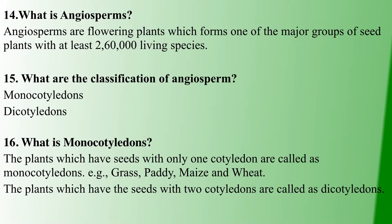Next, angiosperms are the flowering plants majority group. Angiosperms have almost 2,60,000 living species. Angiosperms are of two types: Monocotyledons and Dicotyledons. Monocotyledons have seeds with one cotyledon — examples are grass, paddy, maize, and wheat. Dicotyledons have seeds with double cotyledons.